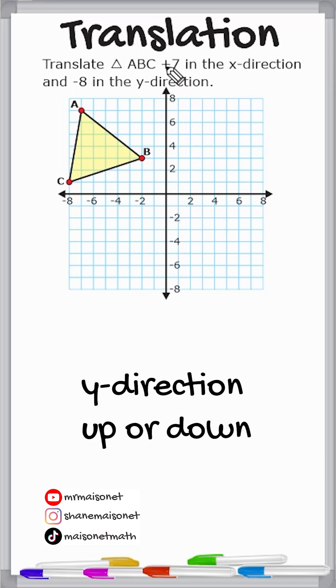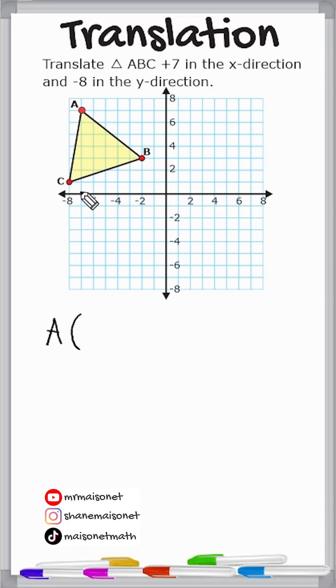So a positive 7 movement in the x-direction just means move 7 to the right, and negative 8 in the y-direction just means moving down 8. So what we're going to do first is record the current coordinates of point A, which are currently negative 7 and positive 7.